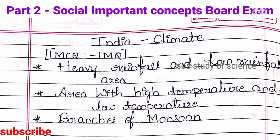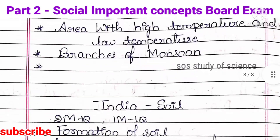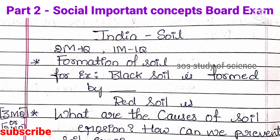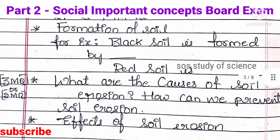Moving to India Soil. Here you can expect one 2-mark question and one 1-mark question. The important concepts are formation of soil — for example, in the exam they can ask: Black soil is formed by dash, Red soil is formed by dash. Such questions can be asked in MCQs. The 3-mark or 2-mark expected questions are: What are the causes of soil erosion? How can we prevent soil erosion? And what are the effects of soil erosion? These are very important concepts from India Soil.